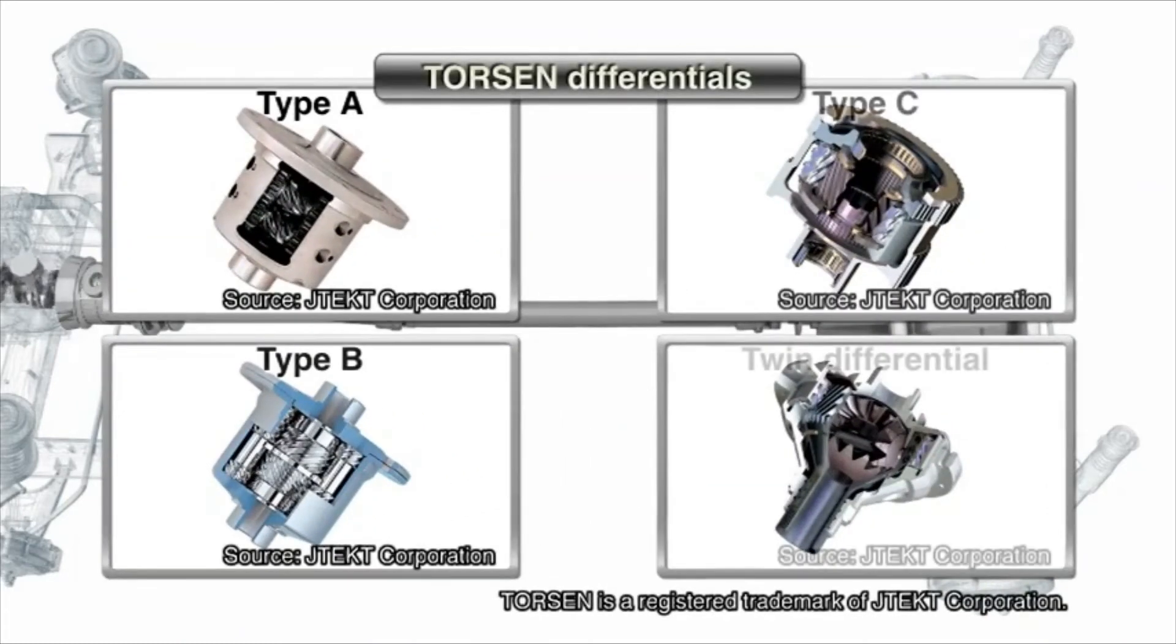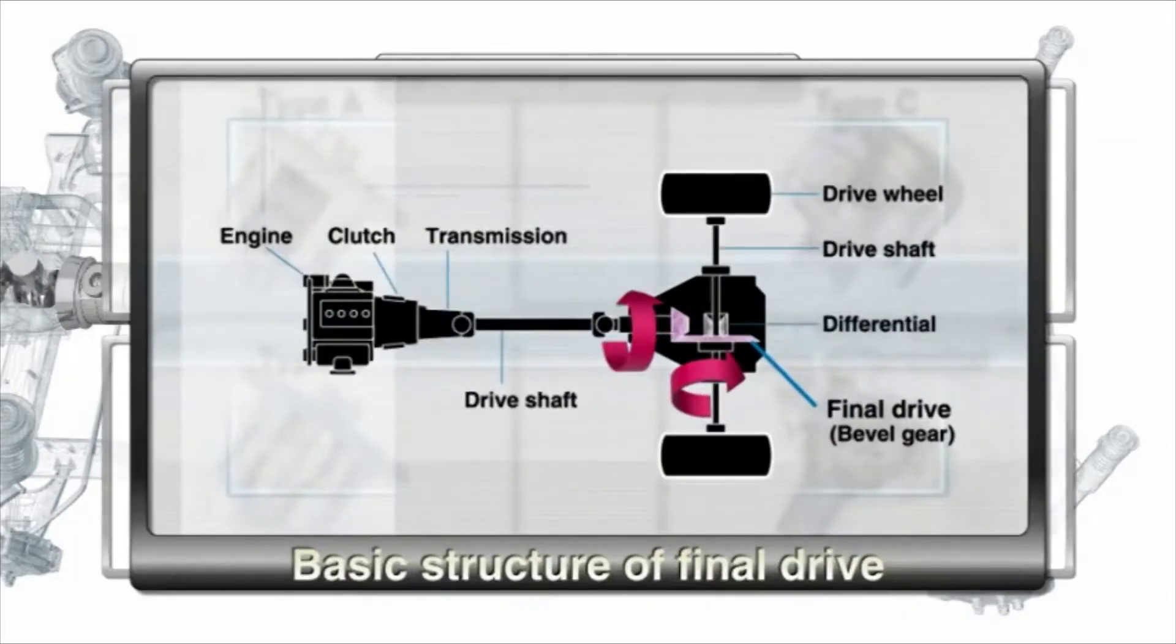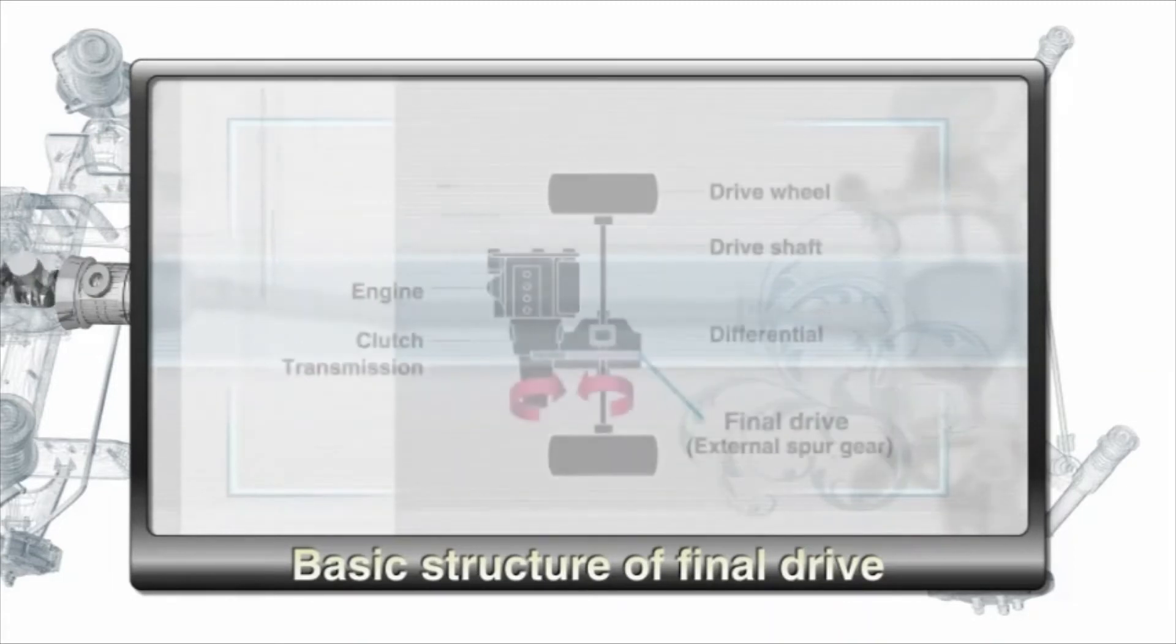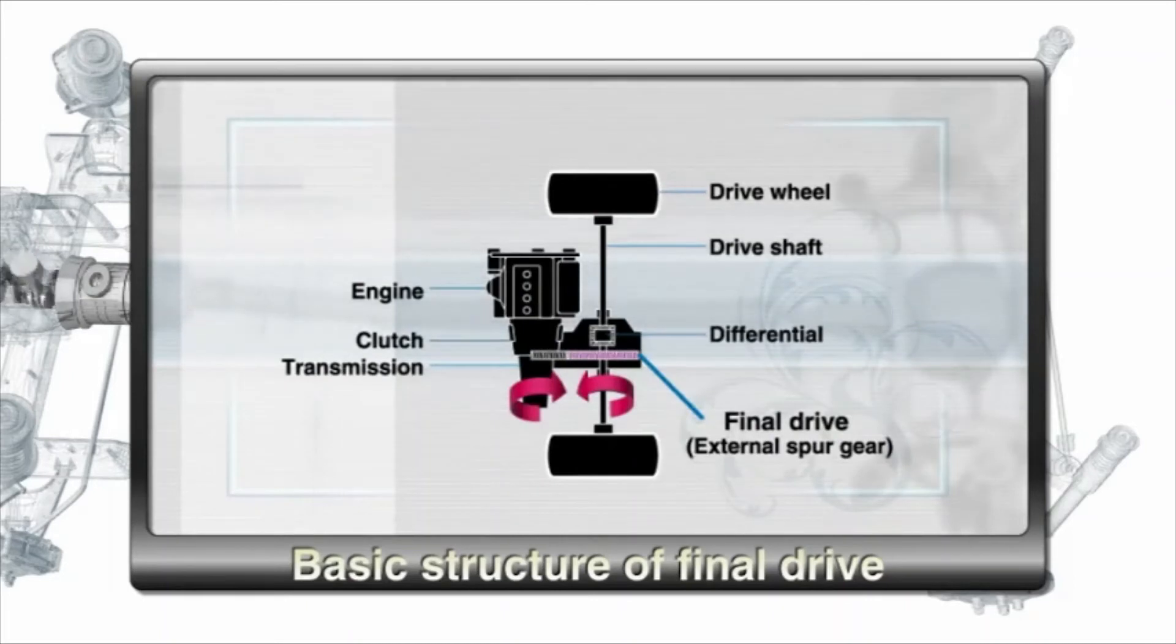Finally, the final drive transmits torque and rotational power to the wheels. In an FR vehicle, bevel gears turn the rotations from the drive shaft 90 degrees. FF vehicles typically use external spur gears since axis of rotation for the transmission and the drive shaft are often the same.